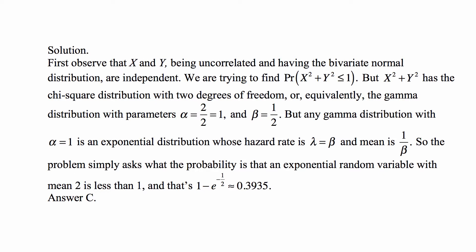Equivalently, this is the gamma distribution with parameters alpha equal to 2/2, or 1, and beta equal to 1/2. The gamma distribution with alpha equal to 1 is an exponential distribution whose hazard rate lambda is the beta parameter, and the mean is 1 over beta. So the problem simply asks what the probability is that an exponential random variable with mean 2 is less than 1.